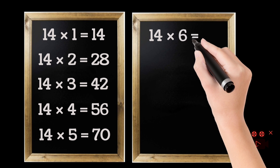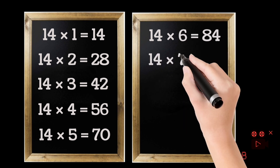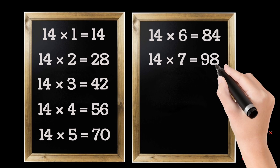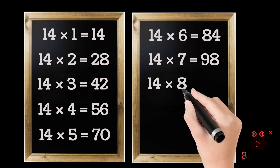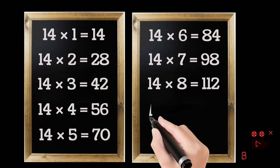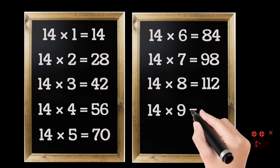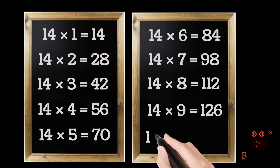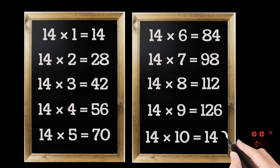14 sixes are 84. 14 sevens are 98. 14 eights are 112. 14 nines are 126. 14 tens are 140.